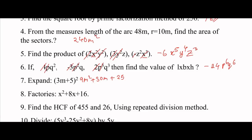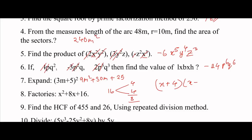Next: factorize. x = -4, so the factors are (x + 4)(x + 4), which is written as (x + 4)².